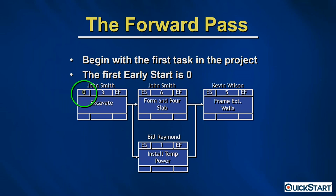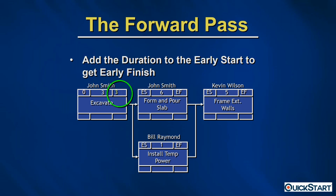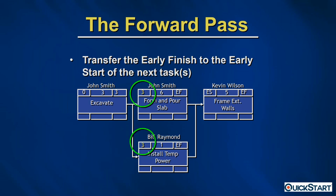To execute the forward pass, we begin with the first task — Excavate — and input a zero for early start. We then add the duration to the early start to get the early finish: zero plus three equals three. Next, we transfer that early finish value of three to the early start of the next tasks in the logical sequence. Those big green circles show we're transferring the three from the predecessor into the next two tasks.